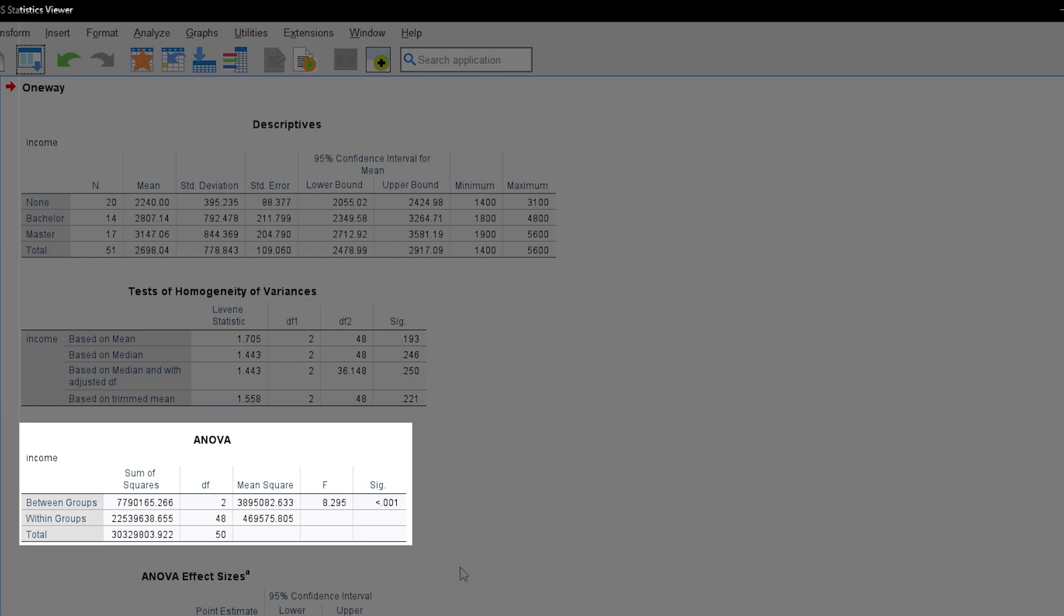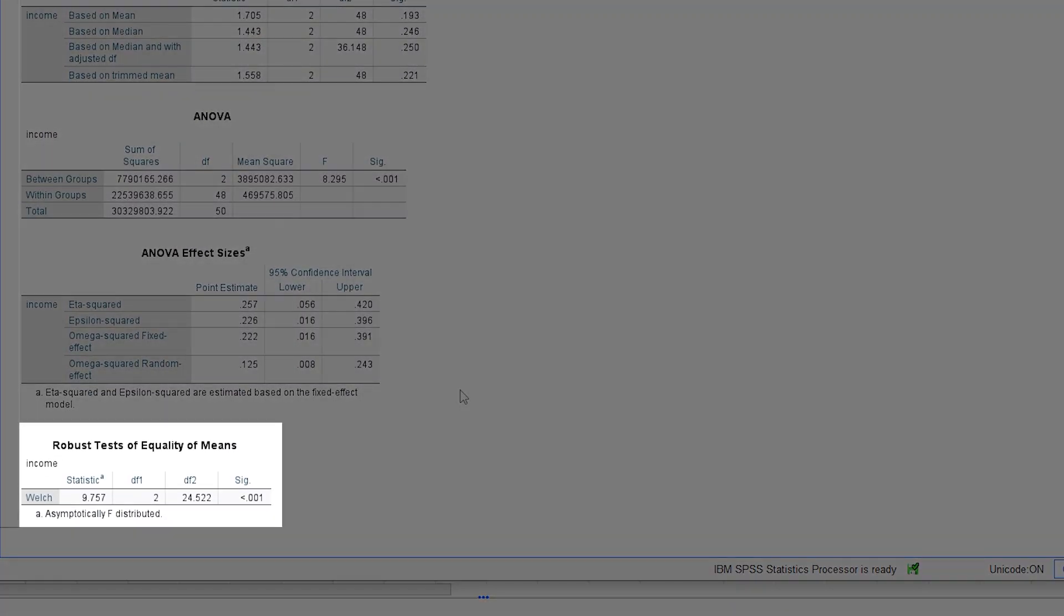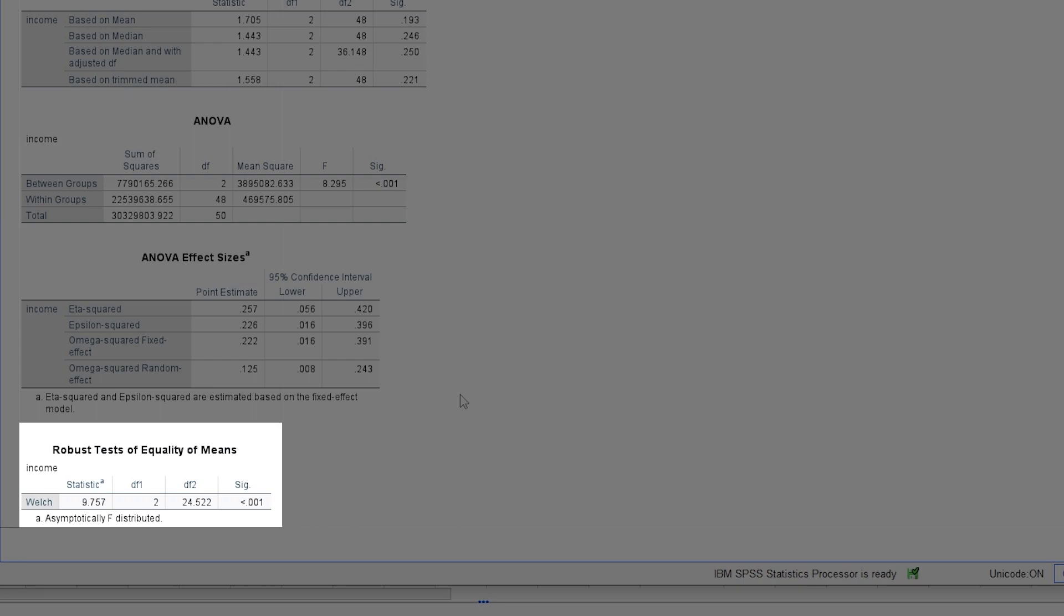Now let's focus on the robust one-way ANOVA, also called Welch ANOVA. It is shown way down at the bottom and can basically be reduced to the p-value as well. We can see a p-value smaller than 0.001, leading to the rejection of the null hypothesis of the ANOVA of equal means across groups. The verdict is the same. The income is different for the three groups in my example.